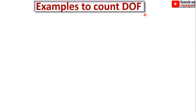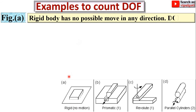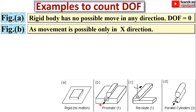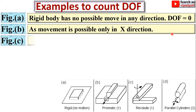Now let's look at examples to count degrees of freedom. Consider figure A: the rigid body has no possible movement in any direction — it is fixed in the plane — so there is zero degree of freedom. Consider figure B: movement is possible in one direction only, that is in the x-direction. There is only one motion possible along the x-axis, so the degree of freedom equals 1.